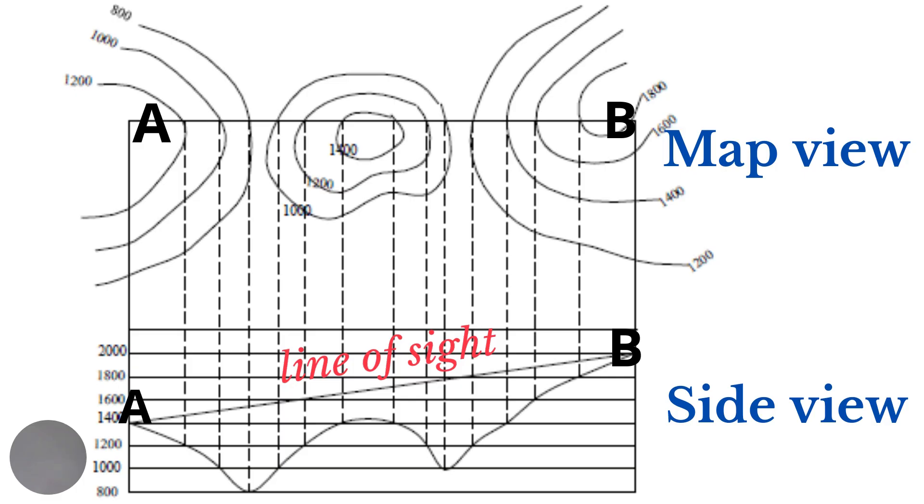And to find inter-visibility on a cross section, we need to draw a straight line between the two points in question. If the straight line, which we call the line of sight, passes clearly between the two points, then the two points are inter-visible. If, on the other hand, the line of sight is obstructed or does not pass clearly between the two points, then there is no inter-visibility.